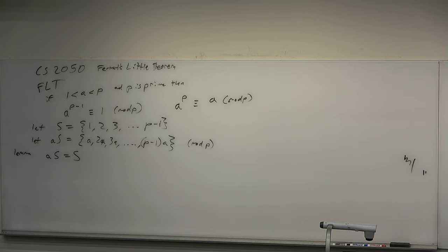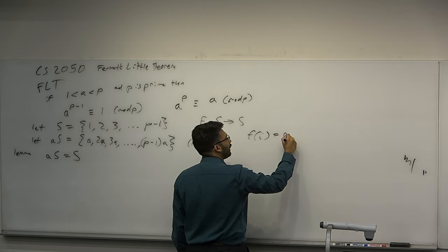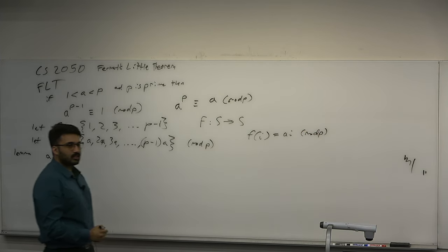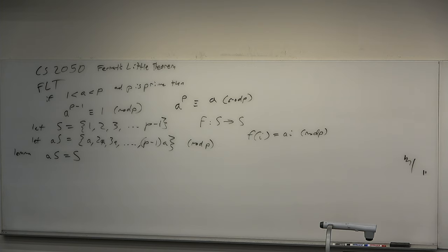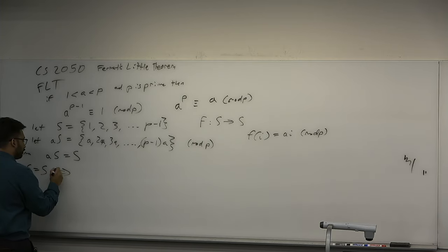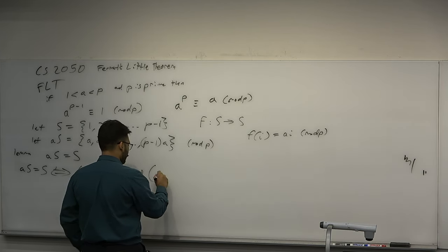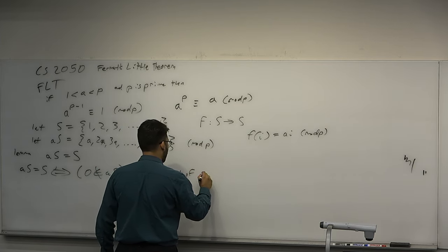What is really the difference between S and aS? We're really talking about a function from S to S such that f(i) = ai mod p. You take each element in S, multiply it by a mod p, and get an element of aS. We basically need to prove that f(i) is a bijection. To prove S equals aS, we need to prove f is a bijection. We can prove that S equals aS if two things are true: one, zero is not an element of aS, and two, the elements of aS are distinct.